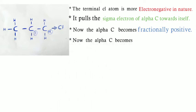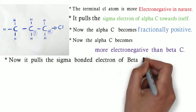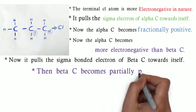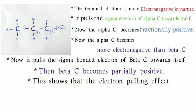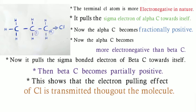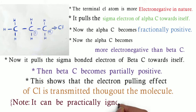Now the alpha carbon becomes more electronegative than the beta carbon next to it, so it pulls the sigma bonded electron pair of the beta carbon towards itself. Then the beta carbon becomes partially positive. It goes on throughout the molecule. This shows that the electron-pulling effect of chlorine is transmitted throughout the molecule. However, it can be practically ignored beyond the beta carbon atom of the chain.